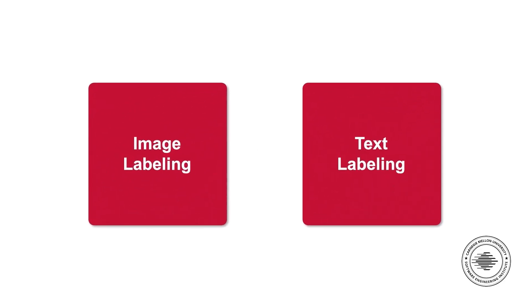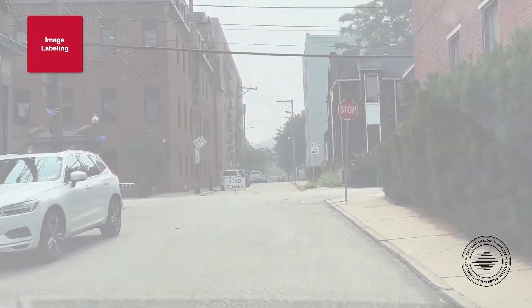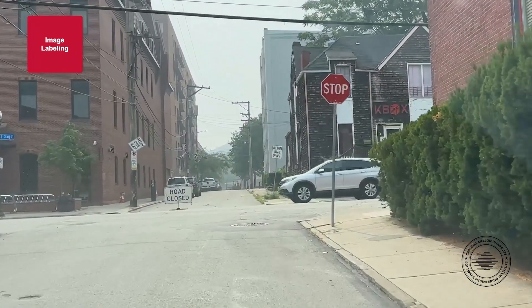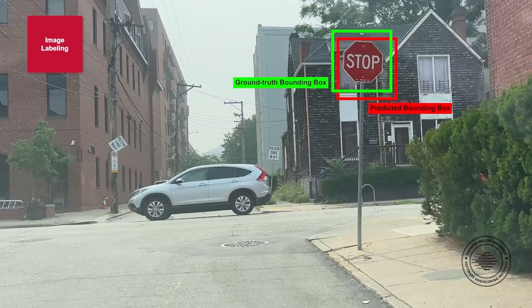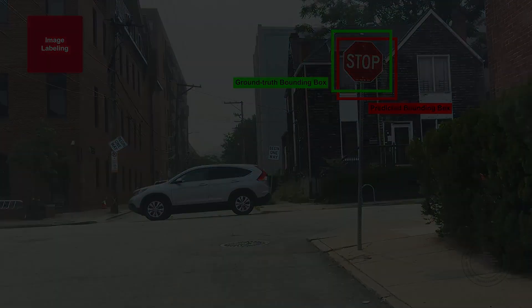This is because the data used to train AI models is often a proxy of real data and is a sample of a much wider target population. For example, when training an image recognition model, the images used to train the model may not represent the full spectrum of images that the model will need to recognize in the real world. This can lead to errors and inaccuracies in AI systems.